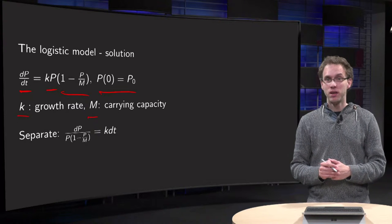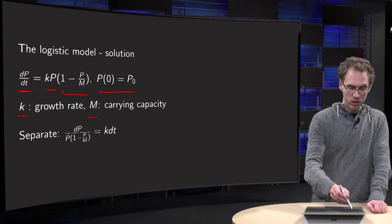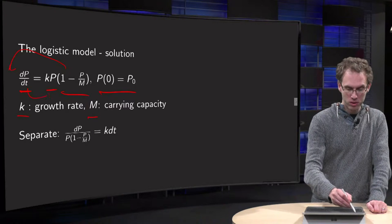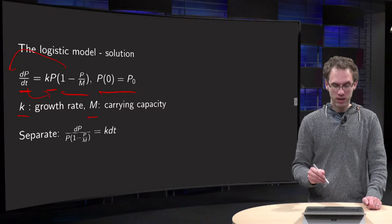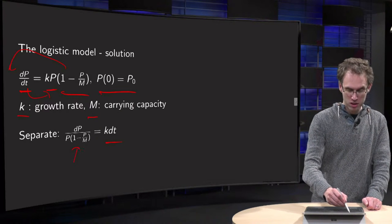Then you can separate, because you have only P's on the right hand side and no t's at all, so you can just put all P's on the left and all t's on the right. The right hand side becomes very easy, and the left hand side becomes slightly messy.